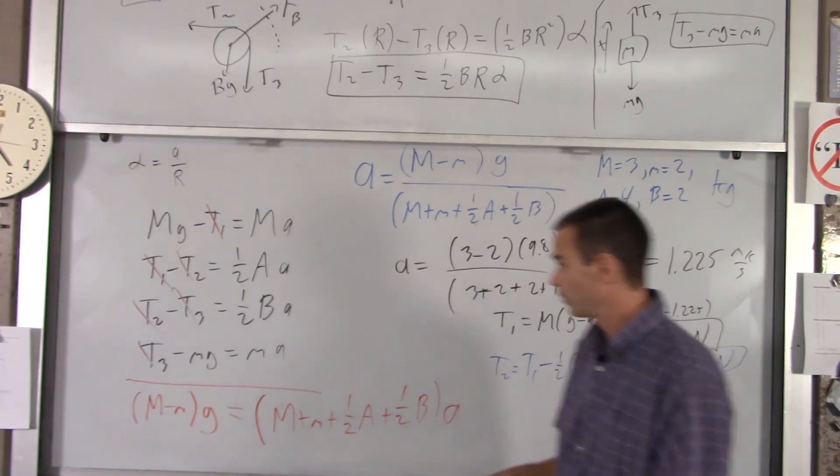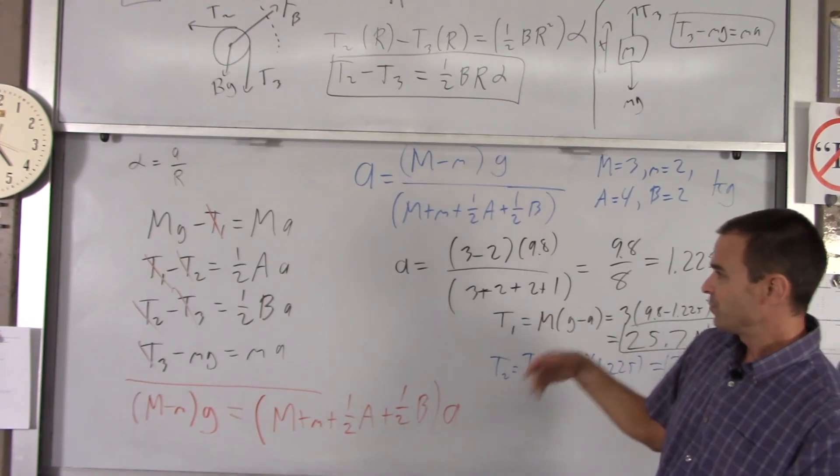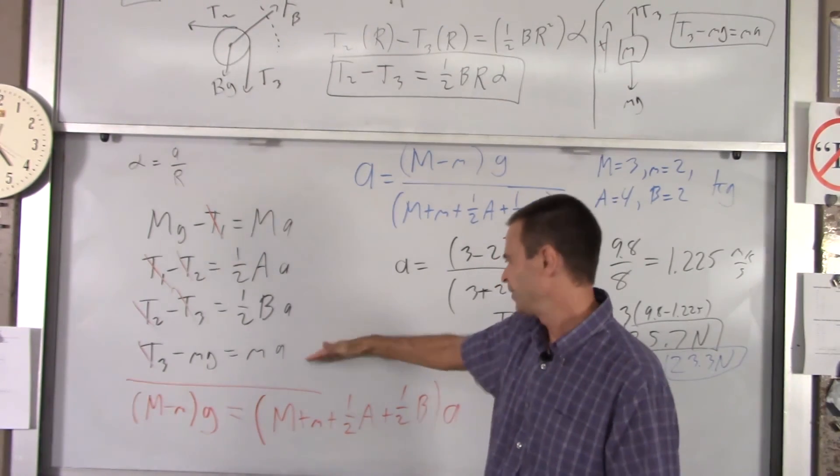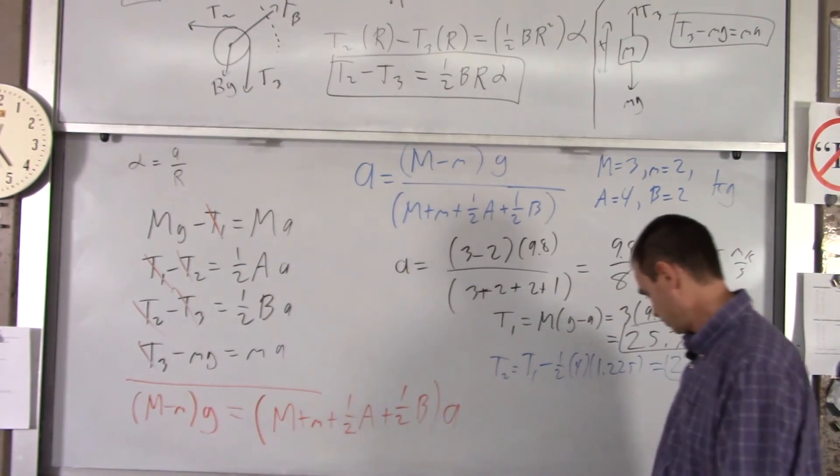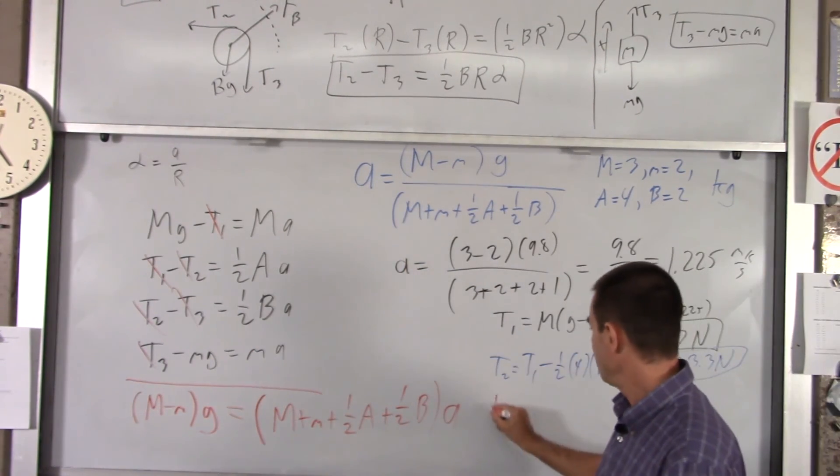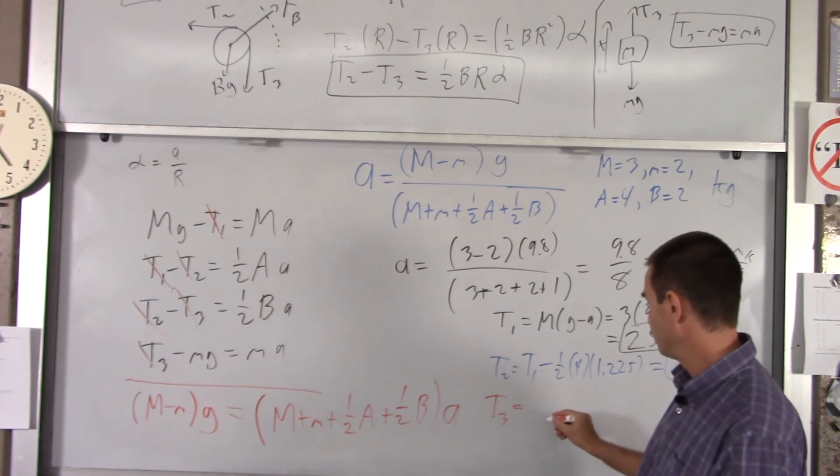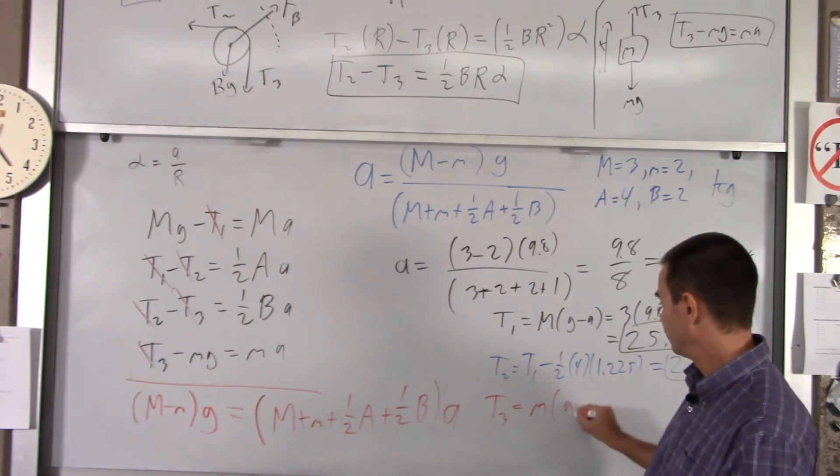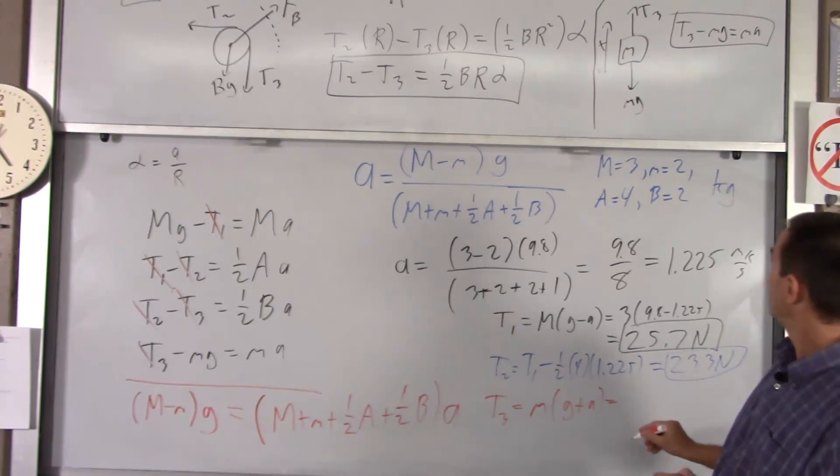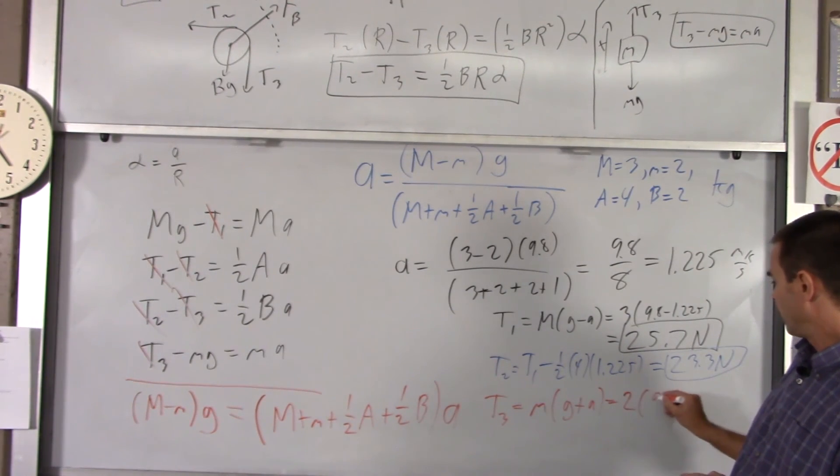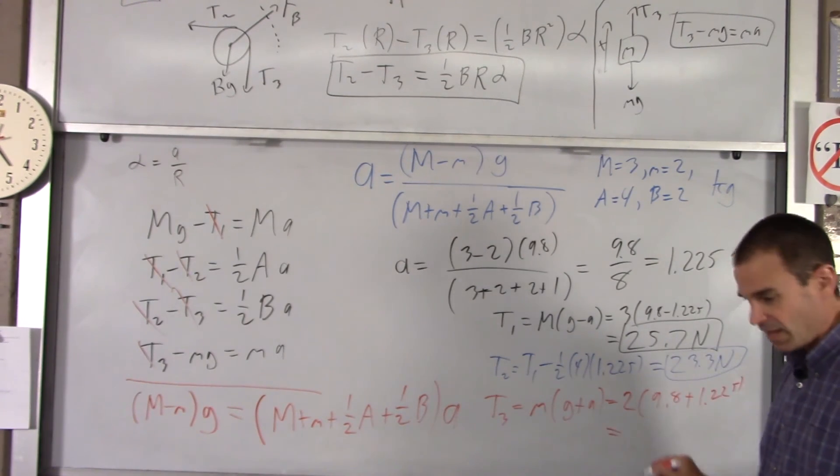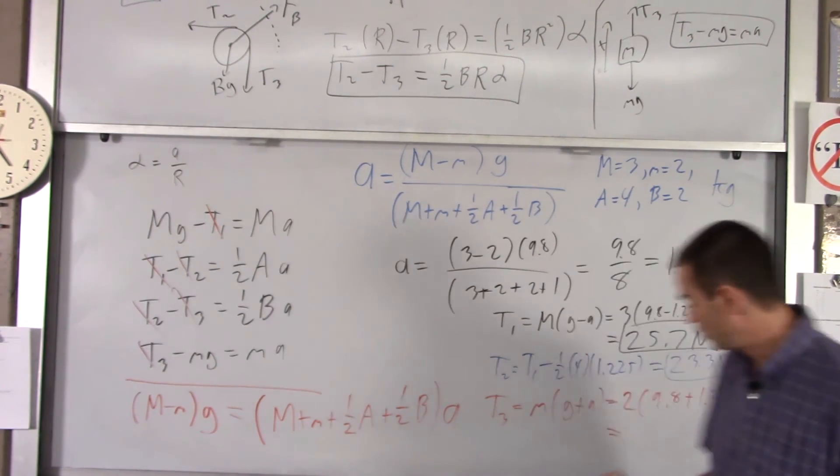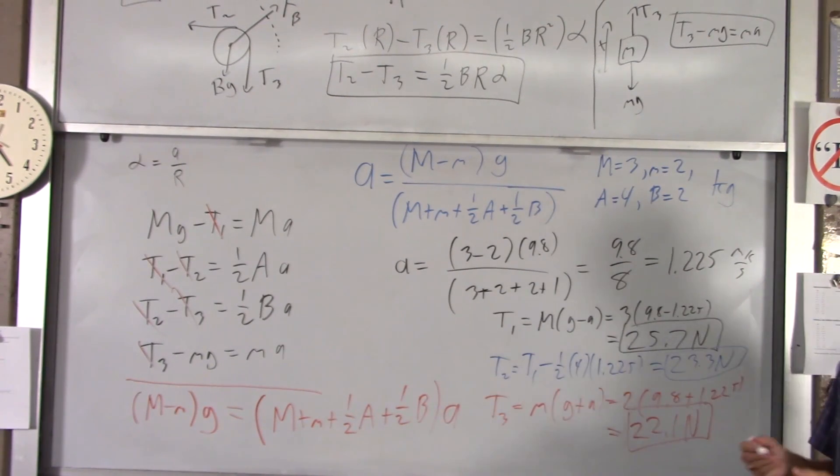And similarly, we're going to find T3. T3 is equal to ma plus mg. So T3 is equal to little m times g plus a. Little m was 2, and we got 9.8 plus 1.225. You get 22.1, which again is less than T2.